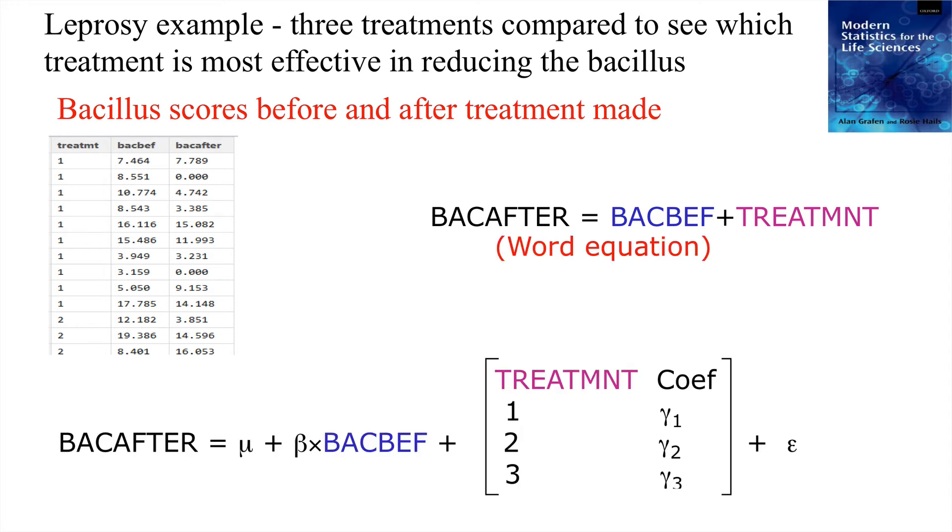That's the word equation. And here is the type of model that we would be fitting. This is the bacillus after. This is the bacillus before, and it's a continuous predictor, a covariate. We might be estimating a gradient here. And here are the adjustments according to the different levels, different types of that drug treatment.